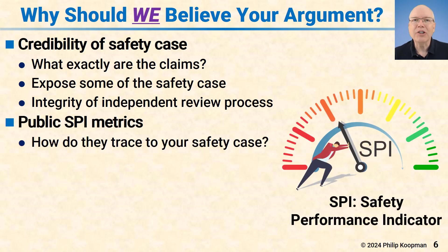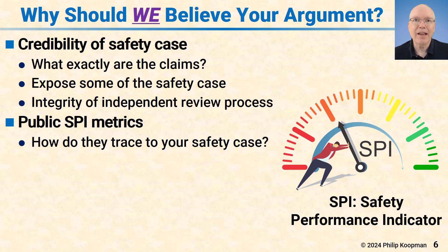Another thing that should be done is public SPIs. How do they trace to your safety case? Companies put out numbers and say, here's our metrics. But without a trace between those metrics and the safety case, those are just numbers. They may sound convincing, but they may or may not be predictive of safety, because it only matters if they trace to the actual safety case.